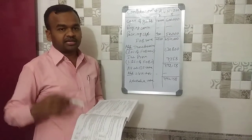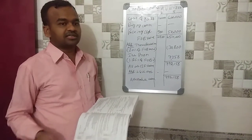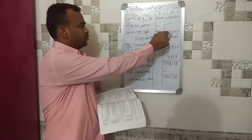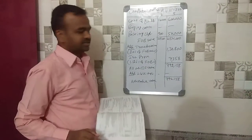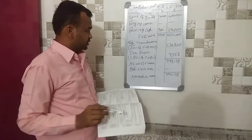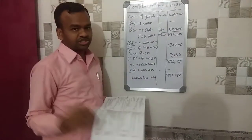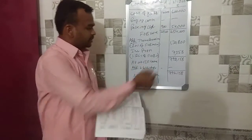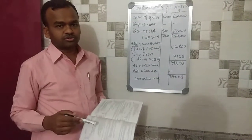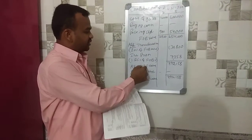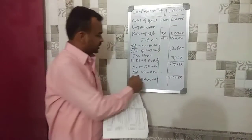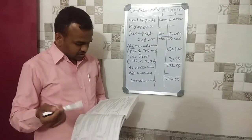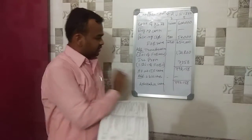Transit insurance premium is calculated at 1.125% of the free-on-board value of six lakh fifty-four thousand rupees, giving approximately seven thousand three hundred fifty-eight rupees. Adding these gives the CIF — Cost, Insurance, and Freight — value, which is the assessable value. For loading and unloading charges, as per the latest rules, a small percentage of the free-on-board value is used.